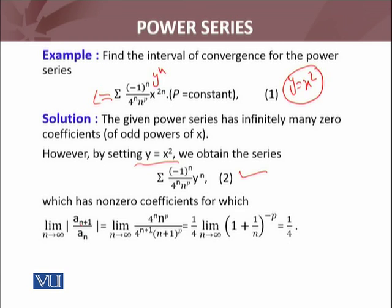limit n approaches infinity of a_{n+1} divided by a_n. This is simple calculation which turns out to be 1 over 4 times limit n approaches infinity of (1 + 1/n)^{-p}.